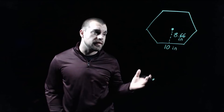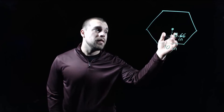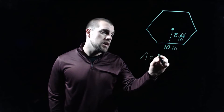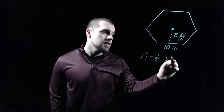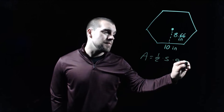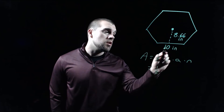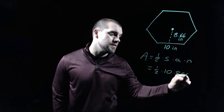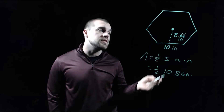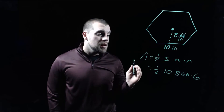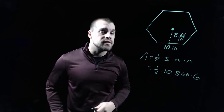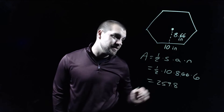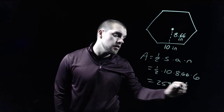In this example, we've got a regular hexagon with side lengths of 10 inches and the apothem length is 8.66 inches. So using that formula, area equals one half times the length of a side times the length of the apothem times the number of sides. Filling in our information: our side length is 10, the apothem is 8.66, and it's a hexagon so it has six sides. Multiplying all of this out on the calculator, we get about 259.8 inches squared.